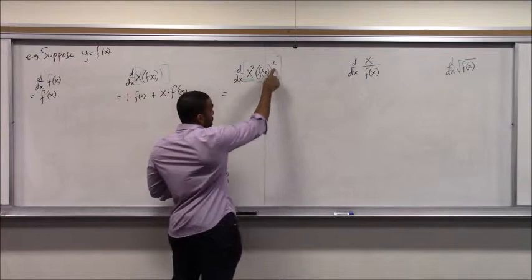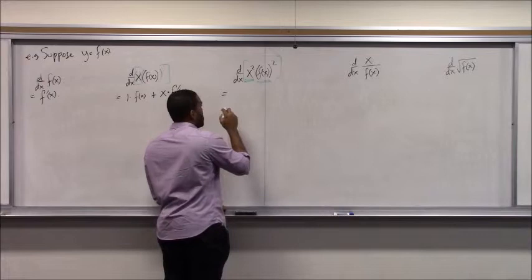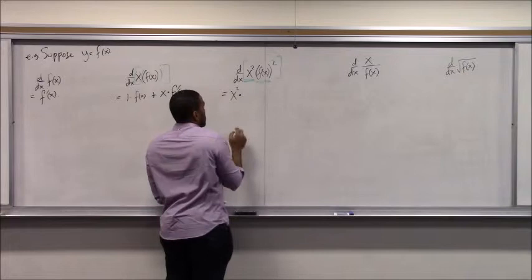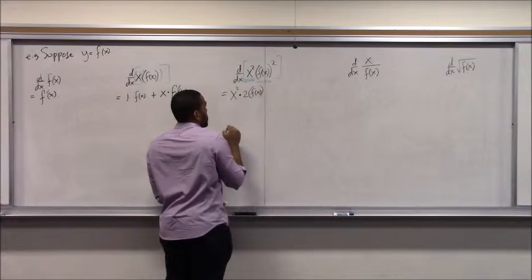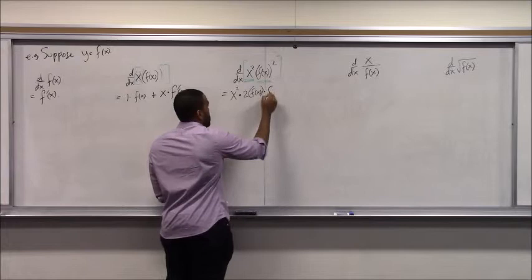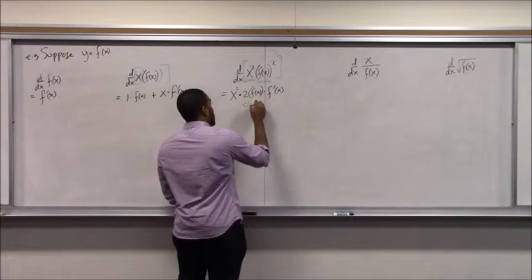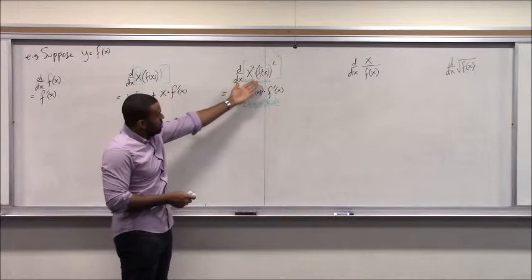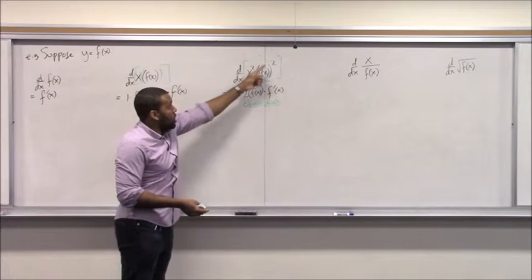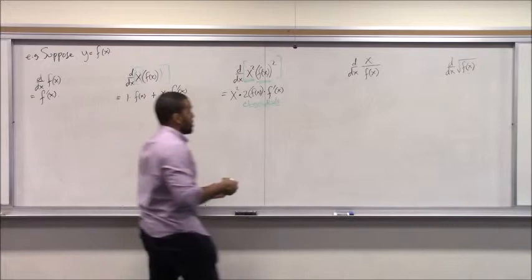So it would be: x squared times the derivative of f(x) squared, which by the chain rule is 2f(x) times f prime — because f(x) is an inside function, you differentiate around it and multiply by the derivative of the inside. Then still doing the product rule: plus 2x times f(x) squared. I'm doing the product rule overall, but to differentiate f(x) squared I use the chain rule.